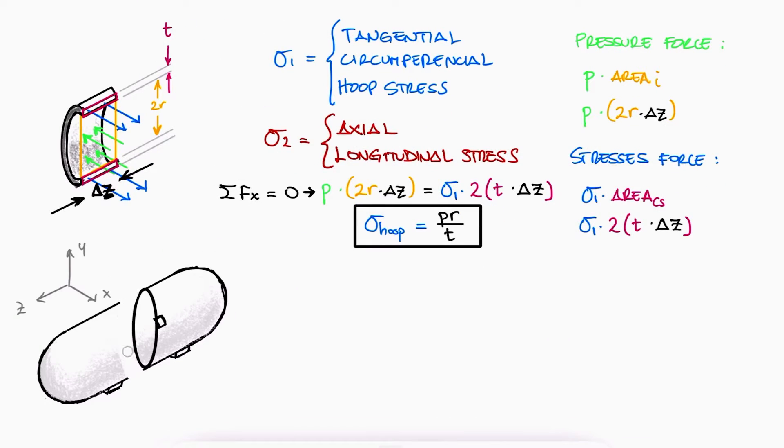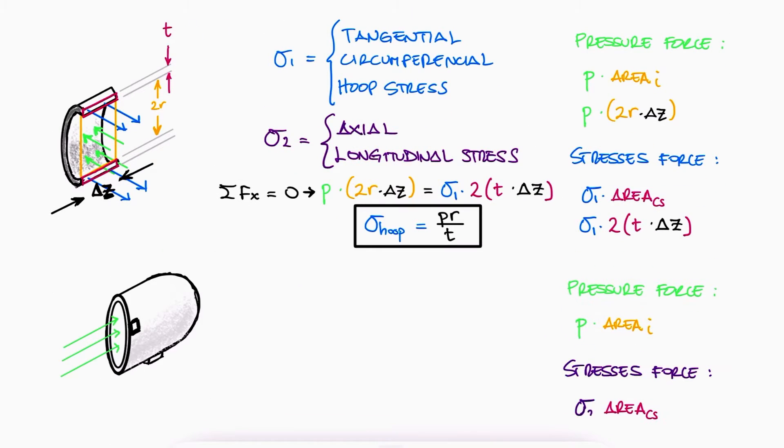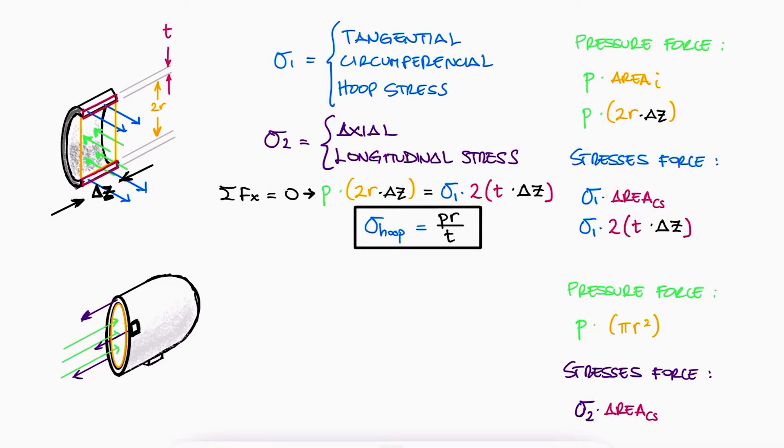If we now perform only one cut along the z-axis and follow the same analysis as pressure and stress, we would say that the force caused by the fluid pressure is p times the area of a circle of radius r, and the force caused by the stress is the stress times the area of a ring.